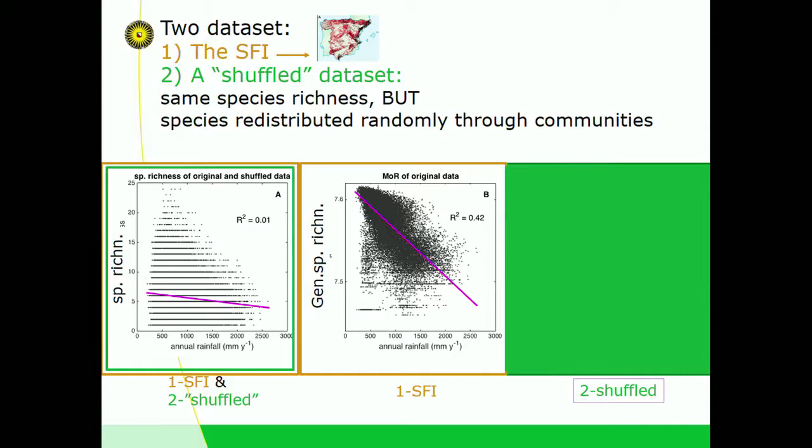What is this generalized species richness? It's not only species richness — it also uses information about community composition. To show this, I take back the Spanish forest data and create a shuffled dataset with exactly the same species richness but scrambled species, completely destroying community composition.